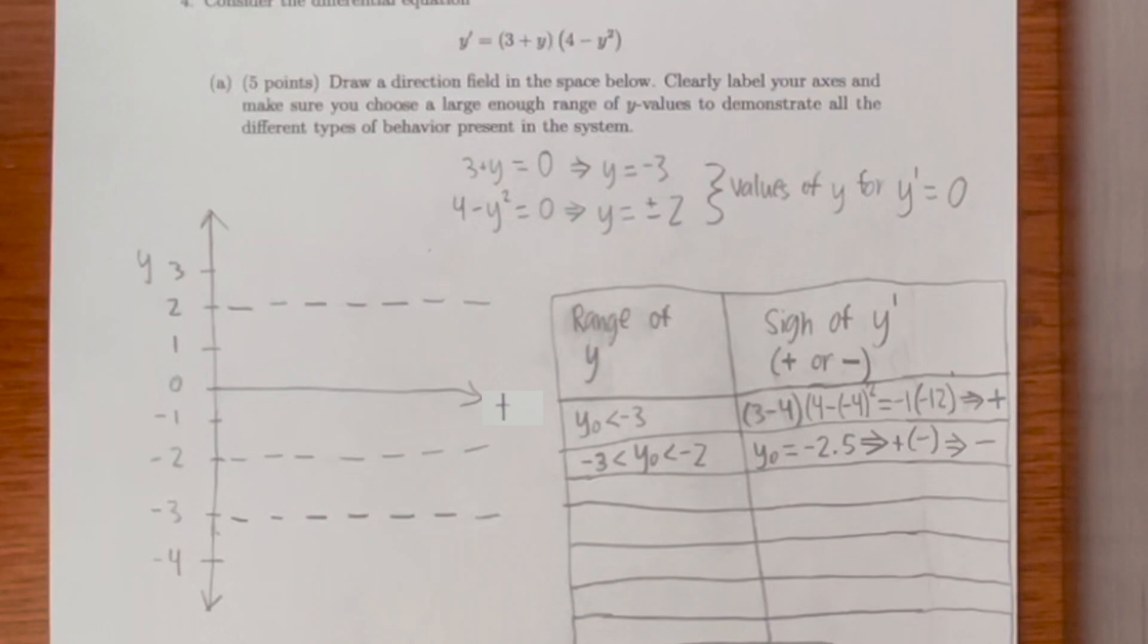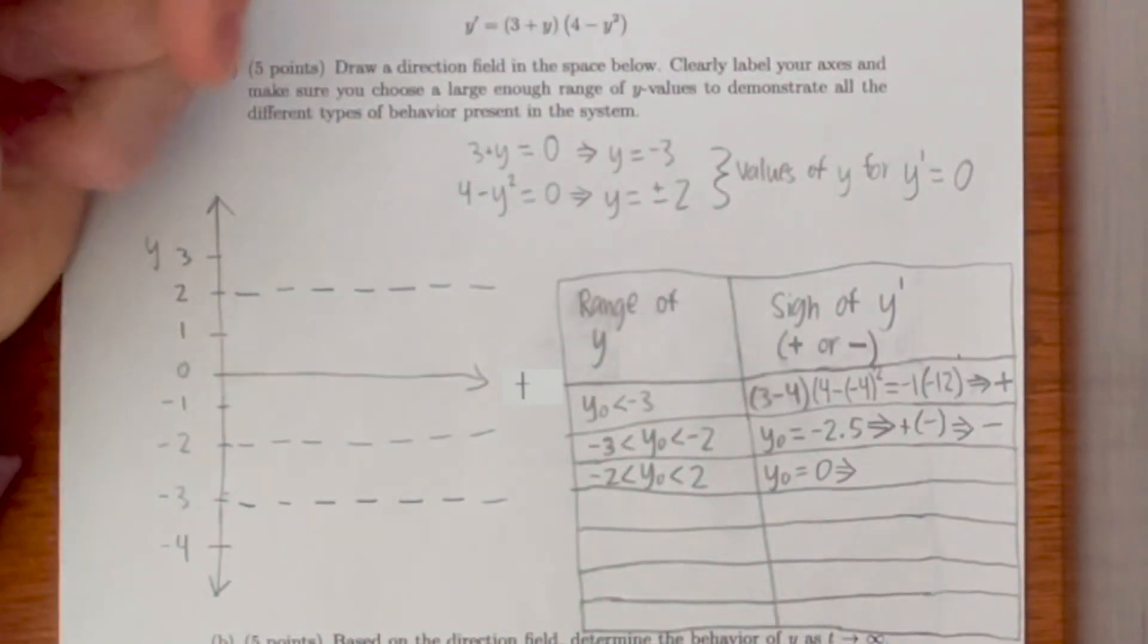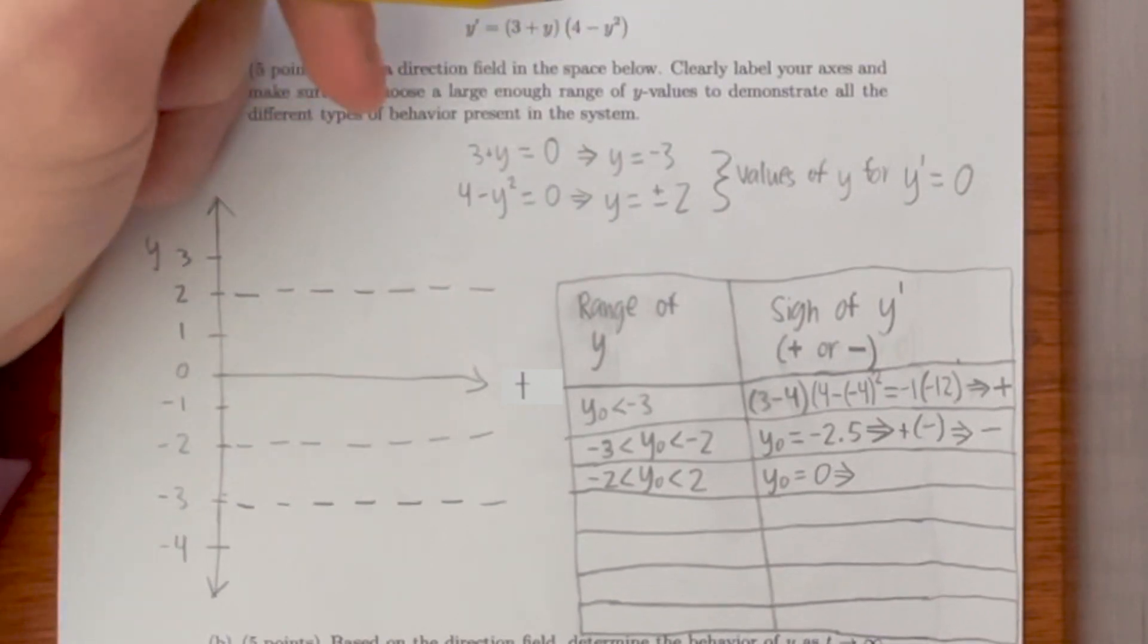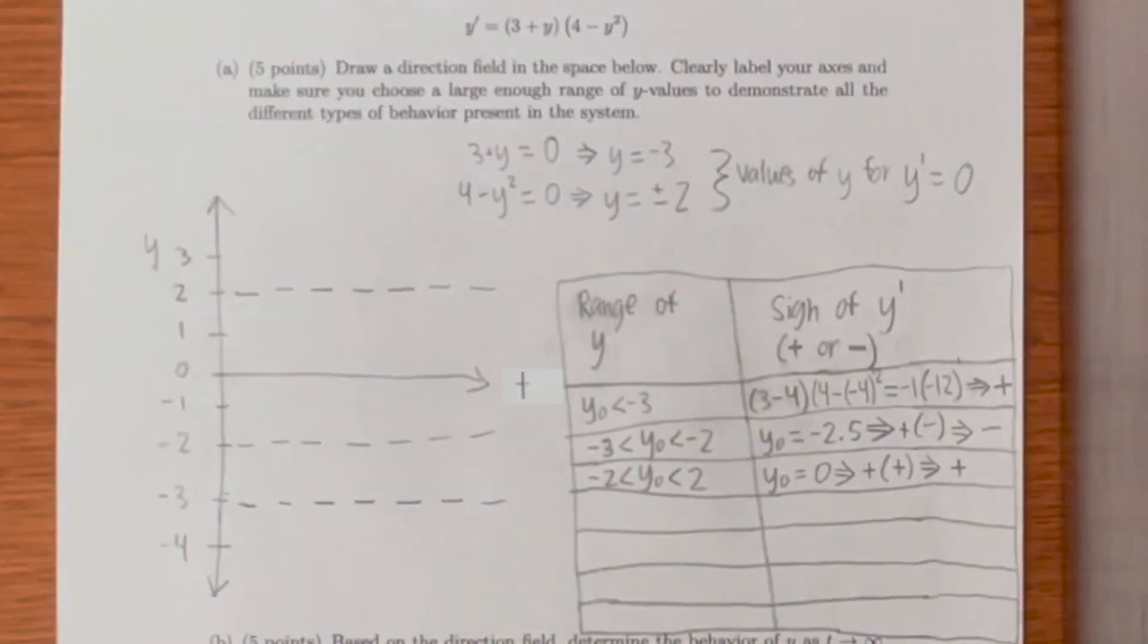Now let's determine the sign of y prime when y naught is between negative 2 and 2. If we try 0, it's two positives being multiplied by each other. A positive is the product. Finally, let's find what y prime is when y naught is greater than 2.